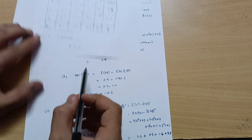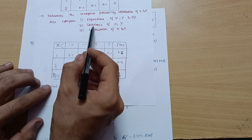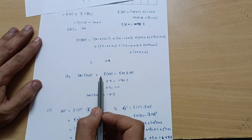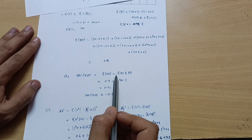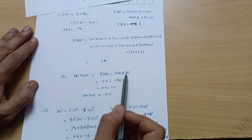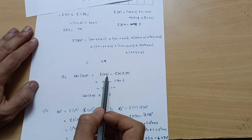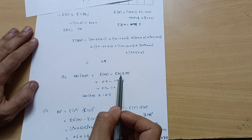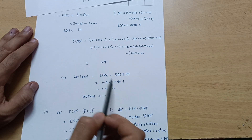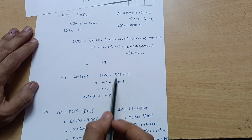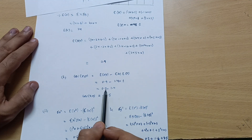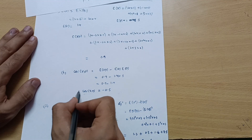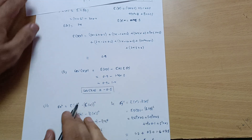For the second part, we calculate Covariance(X, Y). It is always equal to E[XY] minus E[X] times E[Y]. E[XY] is 0.9, E[X] is 1.4, and E[Y] is 1. So Covariance equals 0.9 minus 1.4 times 1, which equals minus 0.5. This is the covariance value.